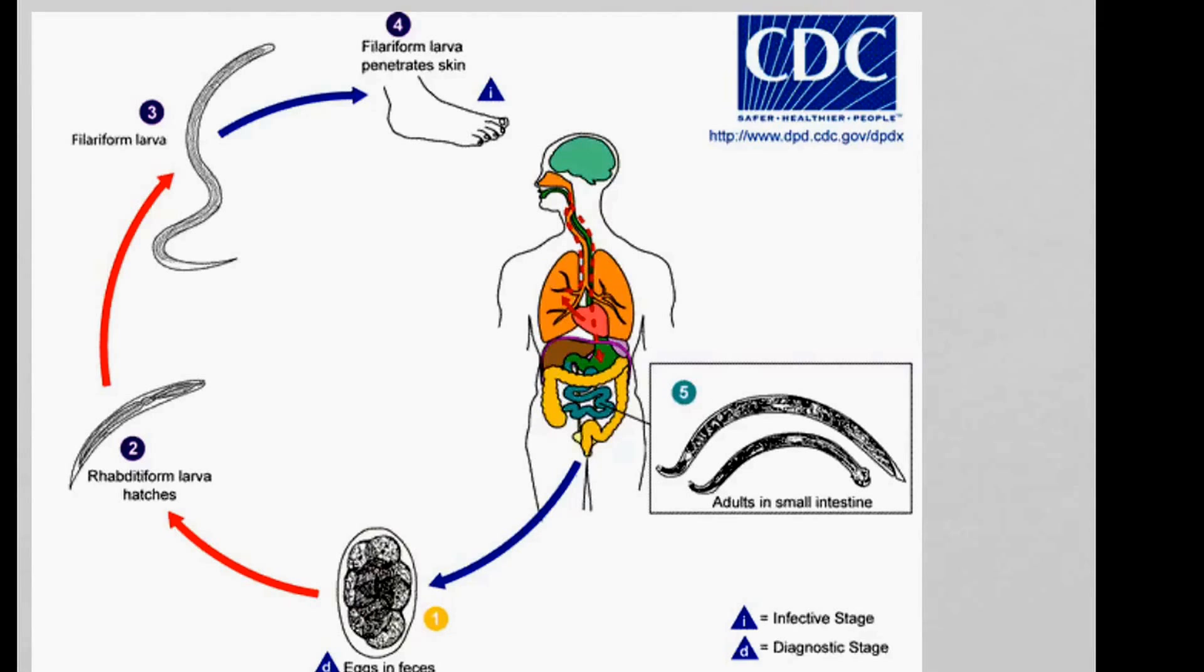From these eggs, larvae hatch. And they are a little bit like a rod, these larvae. They are called rhabditiform larvae, which means rod-like larvae. And then they develop into almost a worm-like filariform larvae.